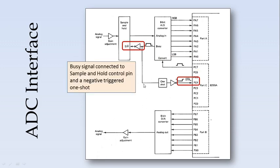Once the start of conversion is given, the ADC gives the BC signal. This is given to the sample and hold circuit to hold the value constant during the conversion. The BC signal is also given to the negative-triggered one-shot. After the conversion is complete, the BC signal will go low, which will trigger this one-shot, indicating that PC4 is used as a handshaking strobing signal. When this one-shot is triggered, the digital count from the ADC is latched to Port A to be read by the 8086.